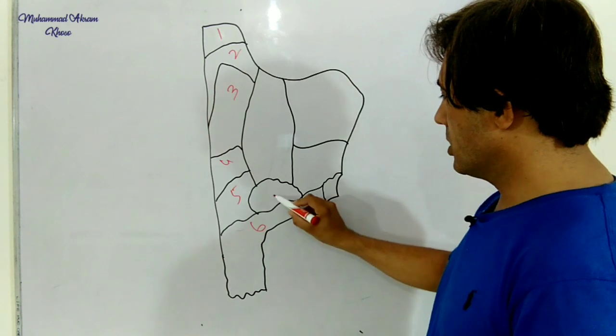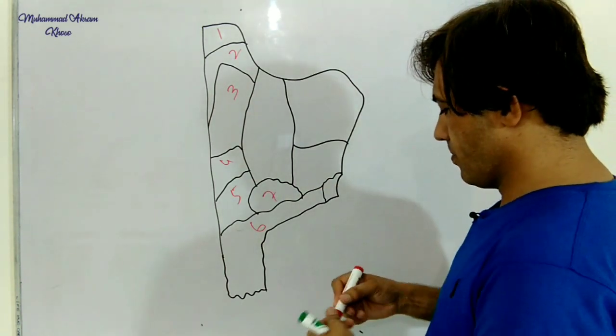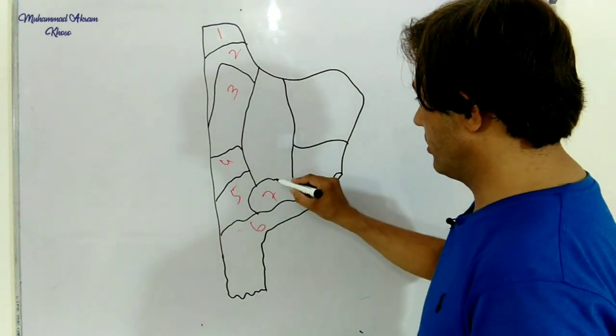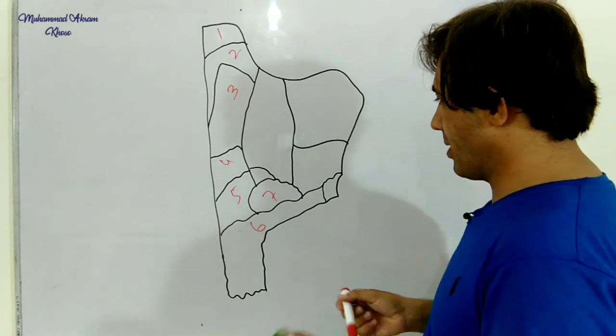Number seven is Macedonia, and there is Kosovo here. It is not a sovereign country, so number eight is Kosovo.